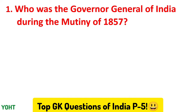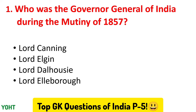The first question is: who was the governor general of India during the mutiny of 1857? The options are Lord Canning, Lord Elgin, Lord Dalhousie, and Lord Elieboro. The correct answer to this question is option number one, which is Lord Canning.